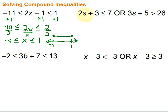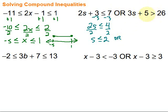On the first inequality, I've got the s I want to get by itself. Subtract 3 from both sides — we get 2s is less than or equal to 4. Divide by 2 — s is less than or equal to 2. Then bring down the OR. On the other side, subtract 5 from both sides — we get 3s is greater than 21. Divide by 3 — s is greater than 7.